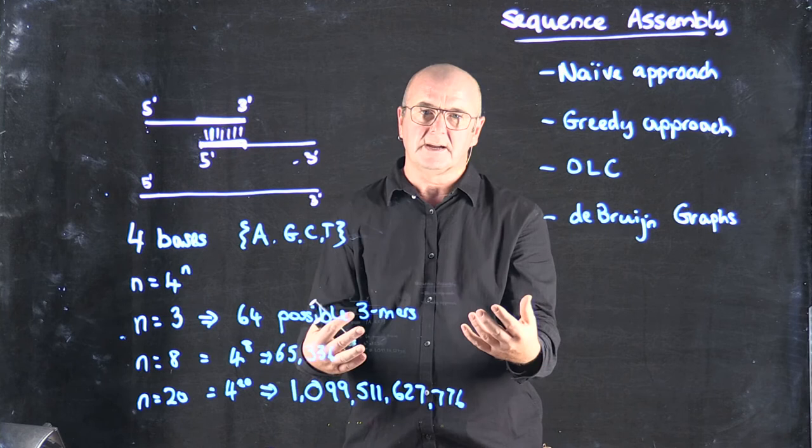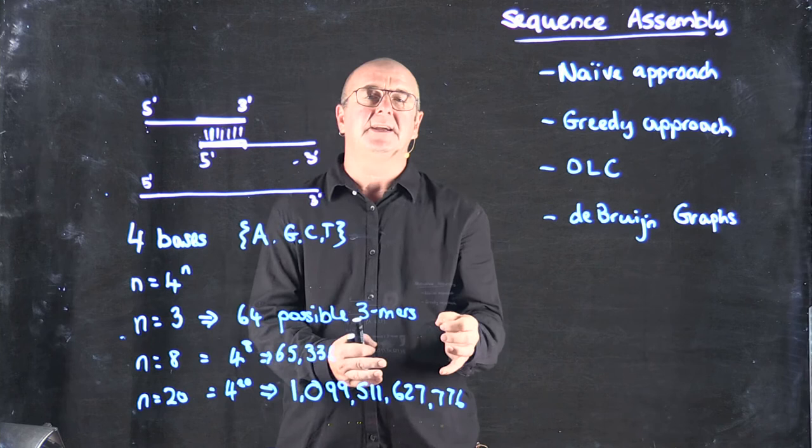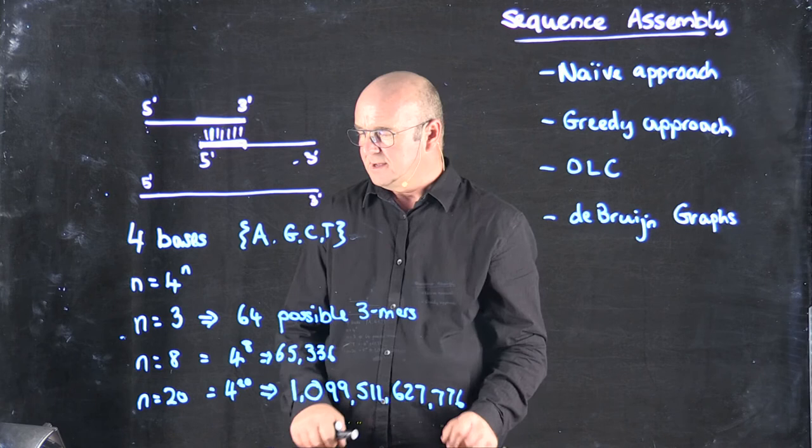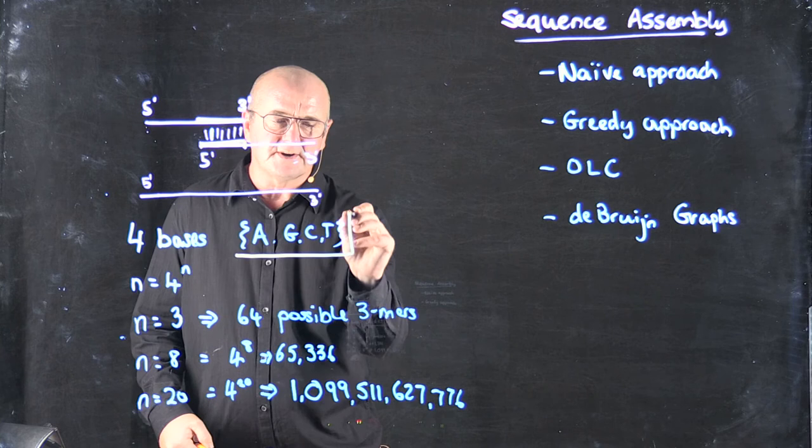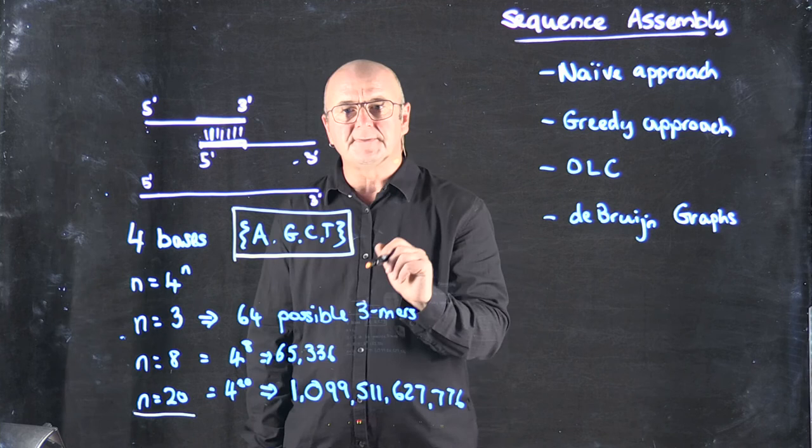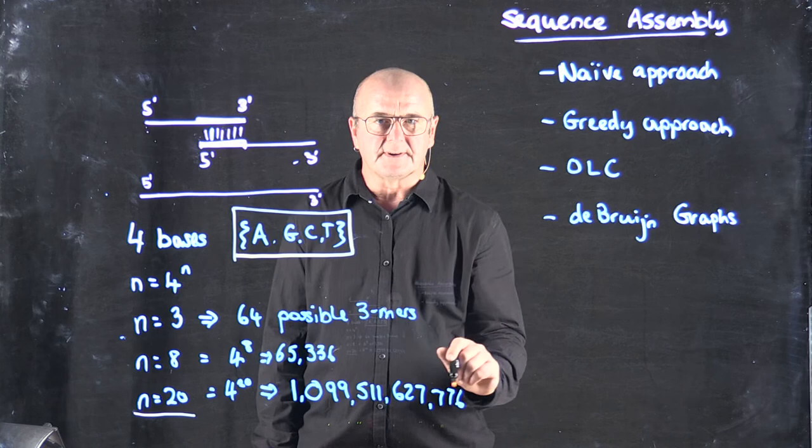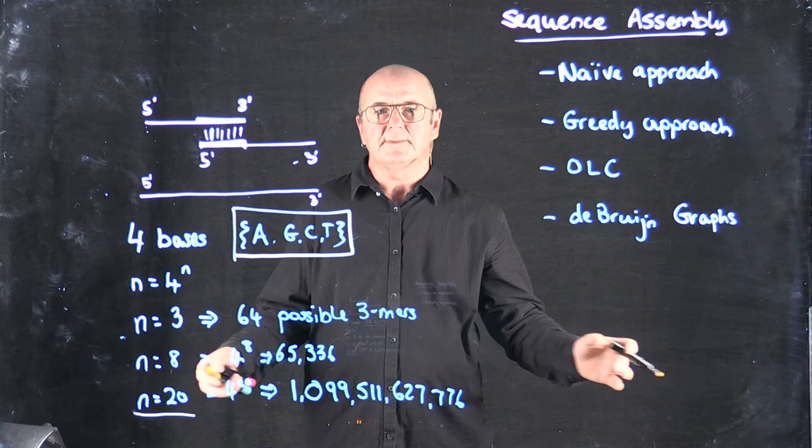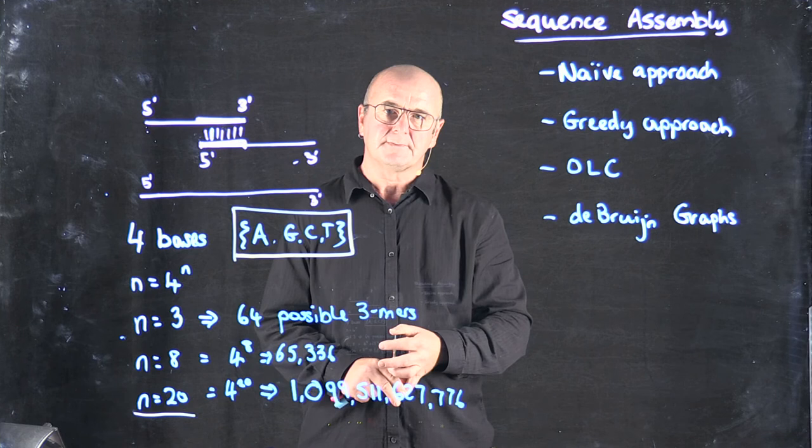The big problem with assembling microbial genomes, or any genome for that matter, and the reason that this doesn't work is that the distribution of bases in a genome sequence and the distribution of 20-mers in the genome sequence is not random. And so you don't find one 20-mer every one billion bases. You find 20-mers very frequently repeated around the genome. And in fact, you find longer regions of the genome that are repeated. And that causes all kinds of problems for this naive approach.